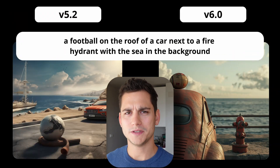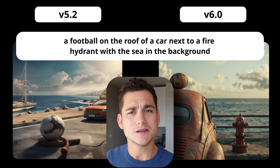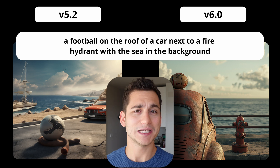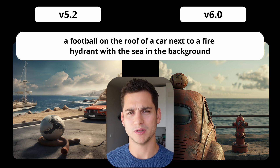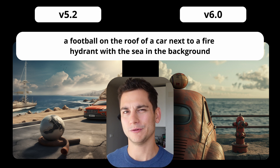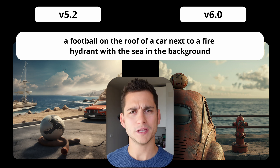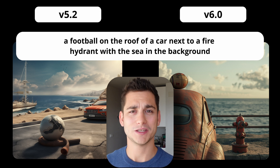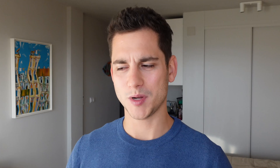If we ask Midjourney to generate an image of a football on the roof of a car next to a fire hydrant with the sea in the background, these are the results. With the old version, we see a football, a car, and the sea, but there is no fire hydrant and items are not placed as specified. The football is on some metallic item, the car is in the background, and there's a boat — an unrequested addition. With version 6.0, we have everything asked for in the prompt, which is fantastic and changes a lot in the world of AI art generation.